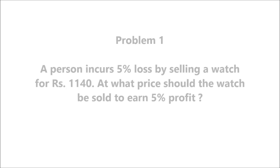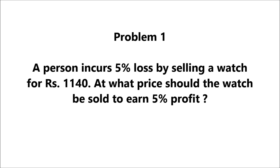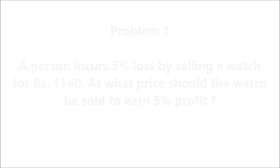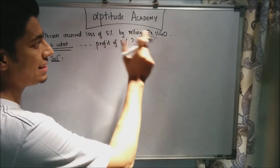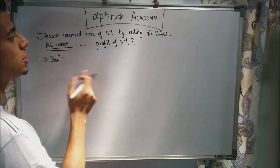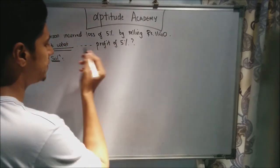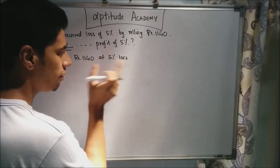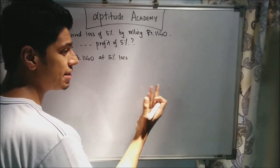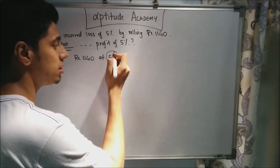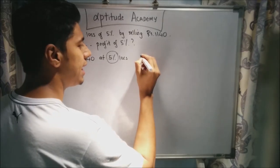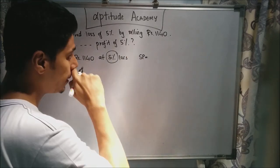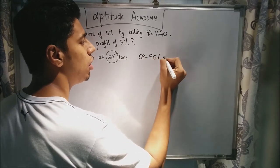Let's start our first sum. Problem 1: A person incurs 5% loss by selling a watch for rupees 1,140. At what price should the watch be sold to earn 5% profit? They've said a person incurred a loss of 5% by selling a product for rupees 1,140. It's a loss, so the selling price is obviously lesser than the cost price. They've told you by how much percent it is lesser. Your SP is 95% of your cost price — this should be quite obvious to you.